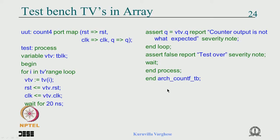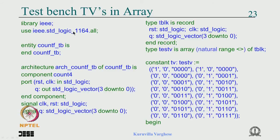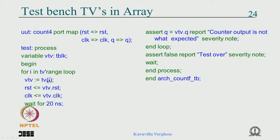That is how we store test vectors in an array with expected results. Quick run: library and package, empty entity, component declaration, signal declaration, record declaration, array of record declaration, initialize the lookup table, then begin, instantiate the component. In the test process, declare the variable, loop through the lookup table, read the current index into the variable, apply the individual elements to the input, give a delay, check that actual output equals the stored output, if not write a message, at the end of the loop print a message to the screen, then wait and end process. This is a very useful test bench.